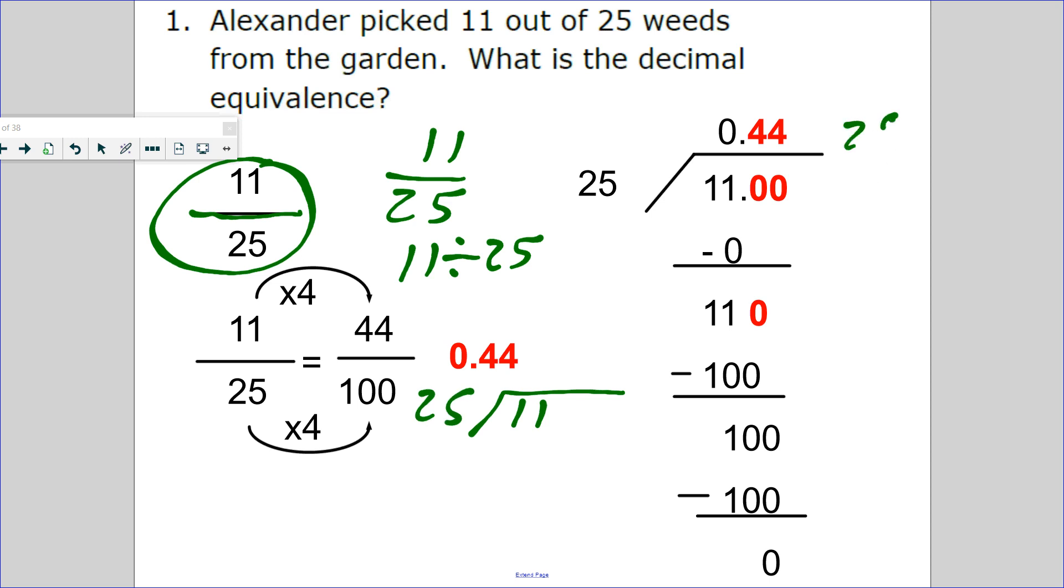I like writing out the patterns for 25 before I begin: 25, 50, 75, 100, 125. Can 25 go into 11? Zero times. Can 25 go into 110? Yes, four times. Can 25 go into 100? Four times. We're done.